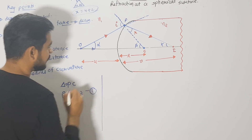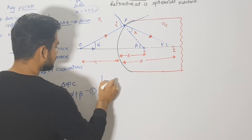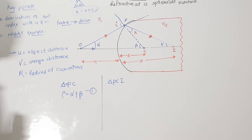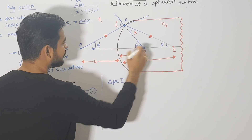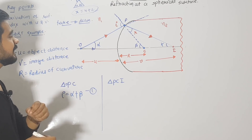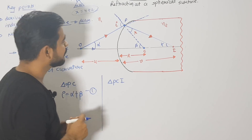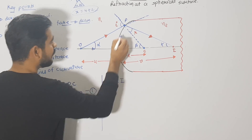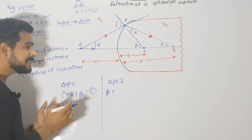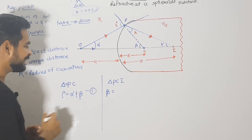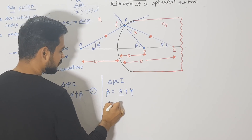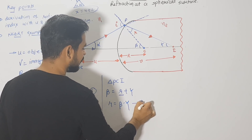In the same way, we have another triangle: P, C, and I. In triangle PCI, which angle is the exterior angle? It is beta. So beta = r + gamma. Making r the subject: r = beta − gamma. This is equation number two. After getting the value of incident angle i and refracted angle r, we will now use Snell's law, which is always applied whenever there is refraction: n1 sin θ1 = n2 sin θ2, where n (or mu) represents the refractive index.